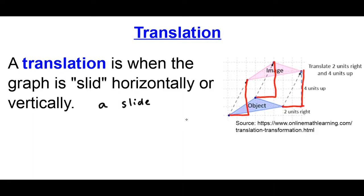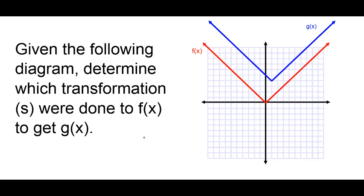And that's a translation. A translation is simply a slide, whether it is vertical or horizontal. A question I'm going to ask is, given the following diagram, determine which transformations were done to f of x to get g of x.